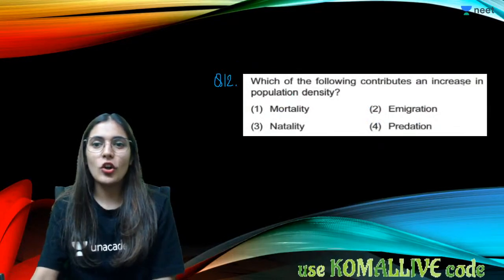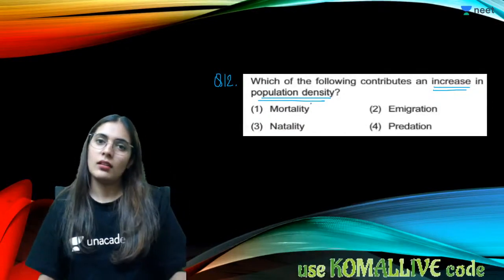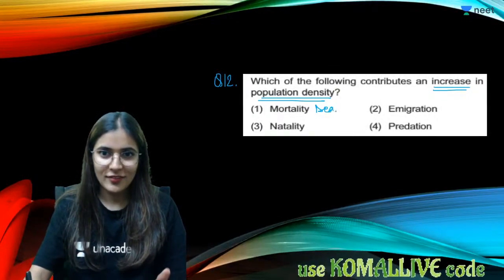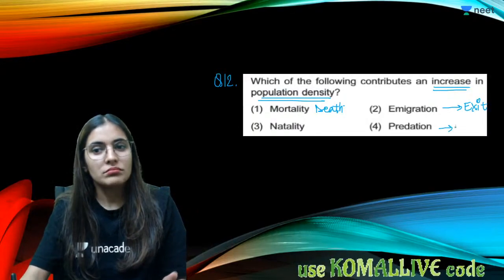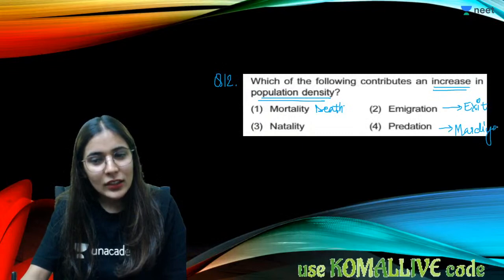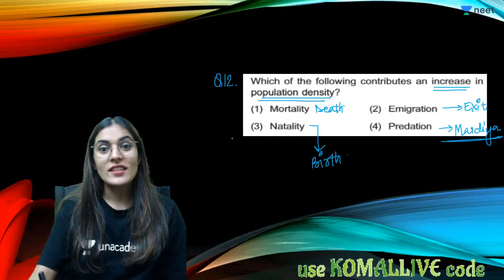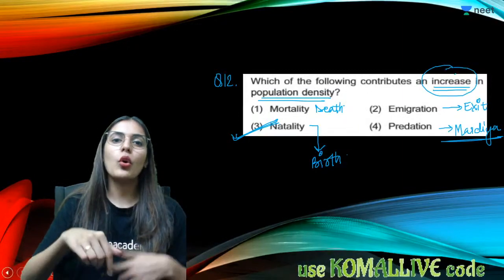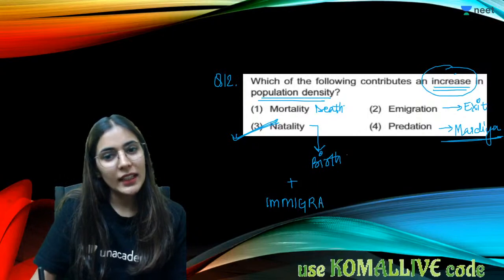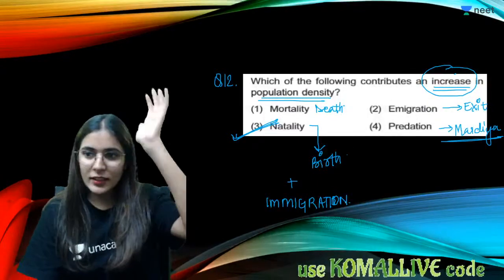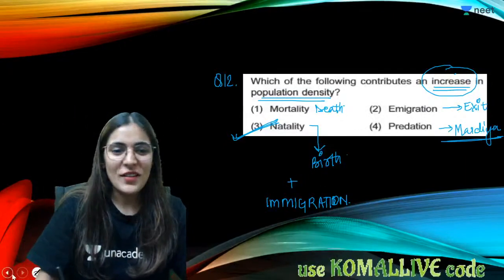Question twelve: which of the following increases population density? Mortality means death, emigration means exit from population, predation kills individuals — these reduce population. Natality (birth) and immigration increase population. The answer is natality and immigration — these cause population growth.